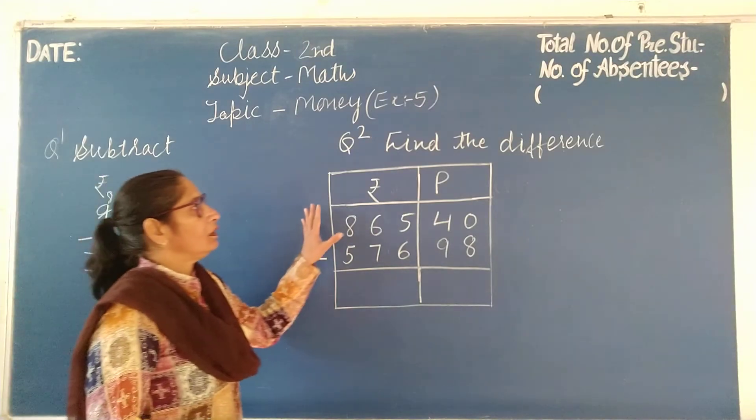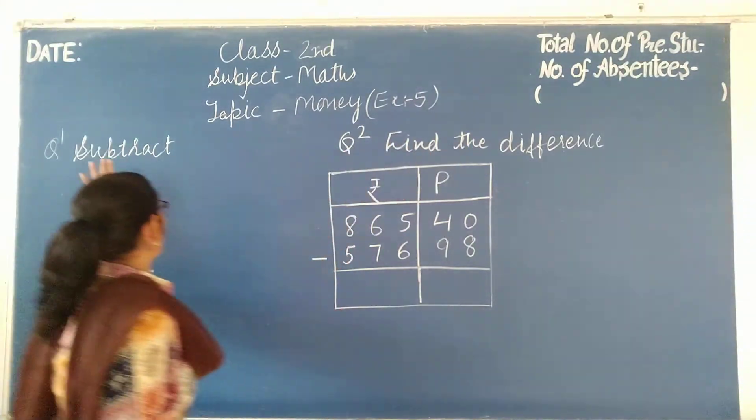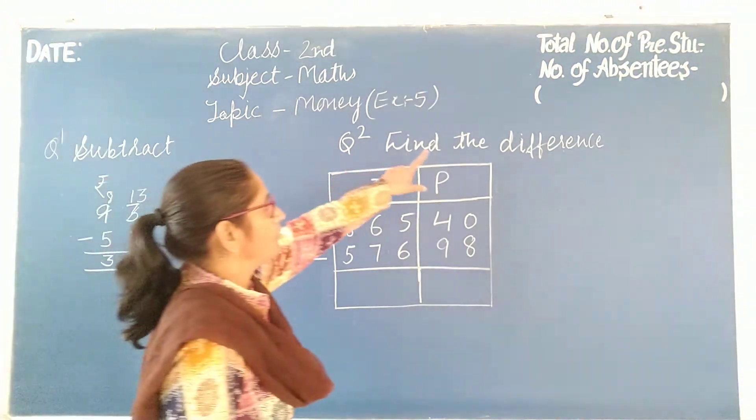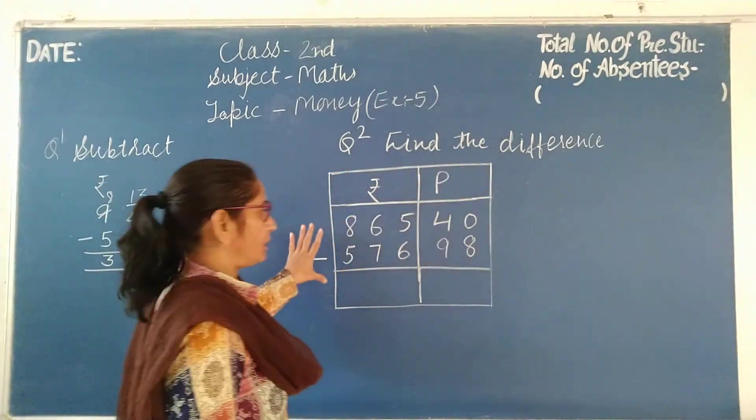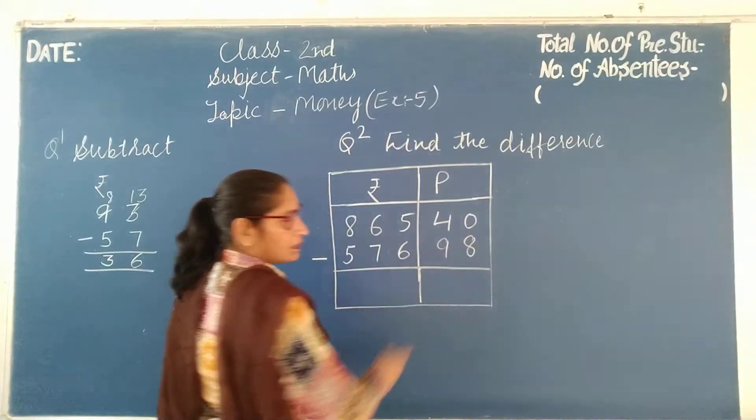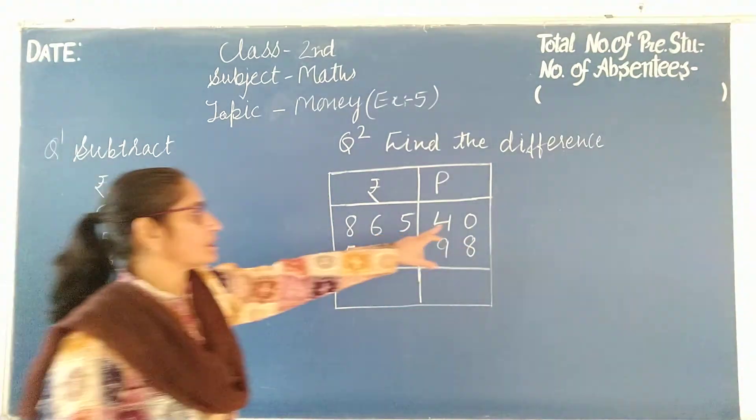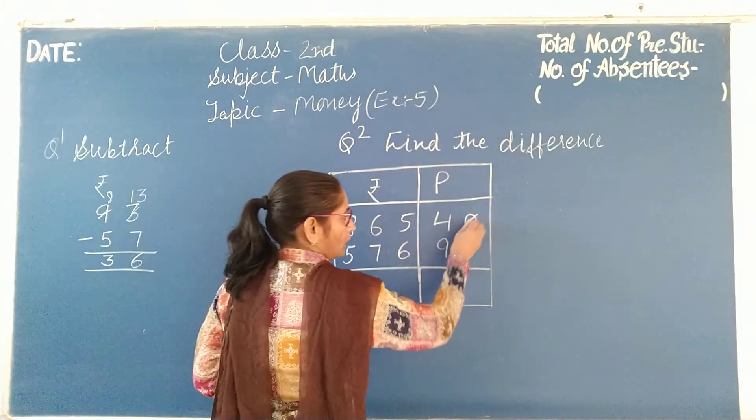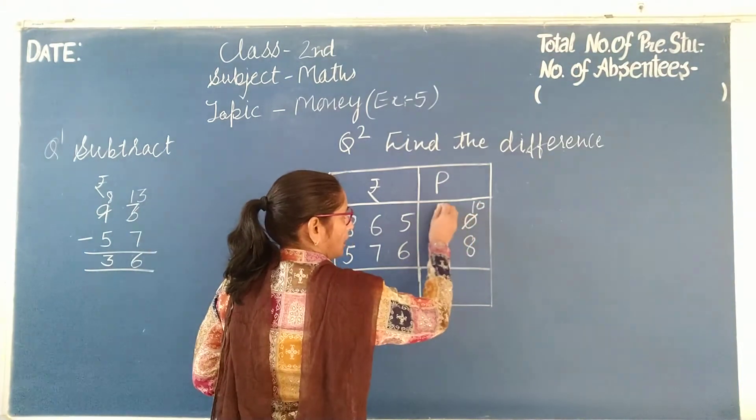Next, we will find the difference. We need to subtract 8 from 0. 0 is smaller than 8, so what do we do? We borrow 10. Here it becomes 3.